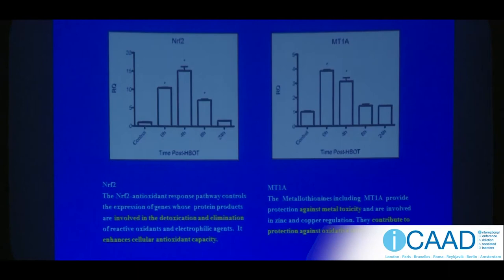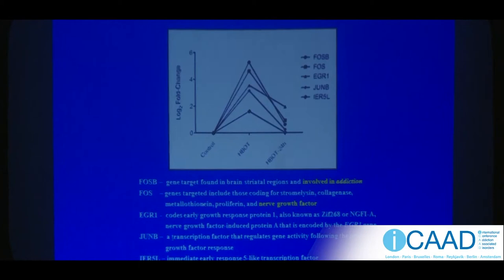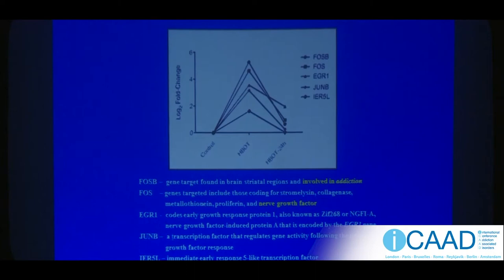Other gene changes under hyperbaric oxygen include genes involved in the elimination of reactive oxidants, enhancing cellular antioxidant capacity; a gene providing protection against metal toxicity and oxidative stress; and FOSB — a target gene found in brain striatal areas involved in addiction. When you breathe a high level of oxygen, you are down-regulating genes involved in inflammation and even addiction. All of the things described in this paper are positive.